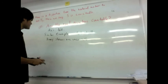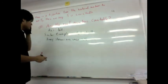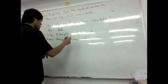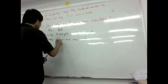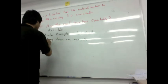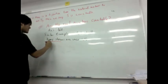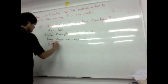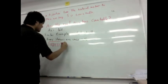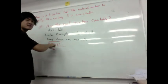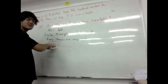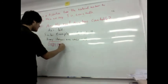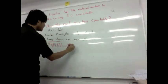A binary stream is just a sequence of zeros and ones — some long infinite binary sequence. For example, a stream might look like: 0, 1, 0, 0, 1, 1, 1, 1, 1, 1, 1, continuing on indefinitely.